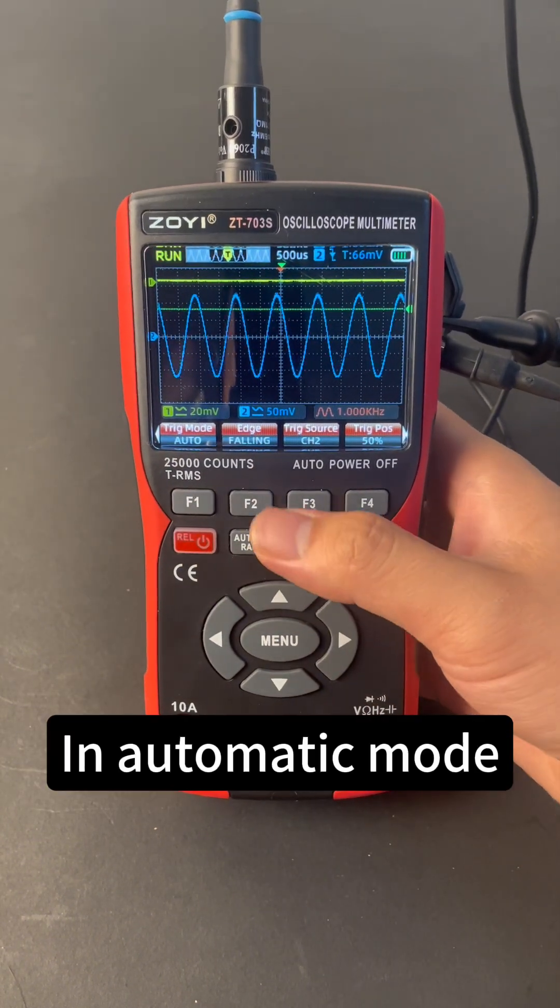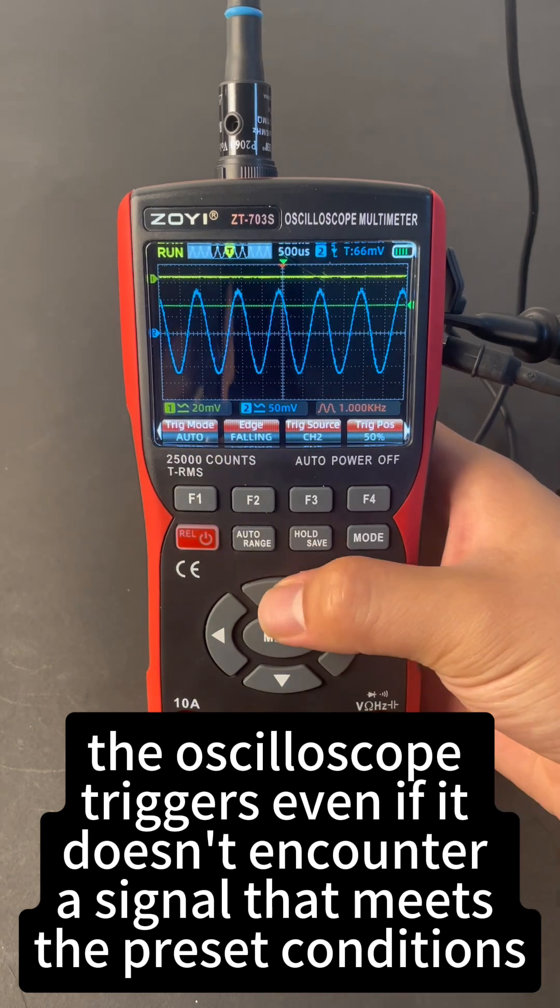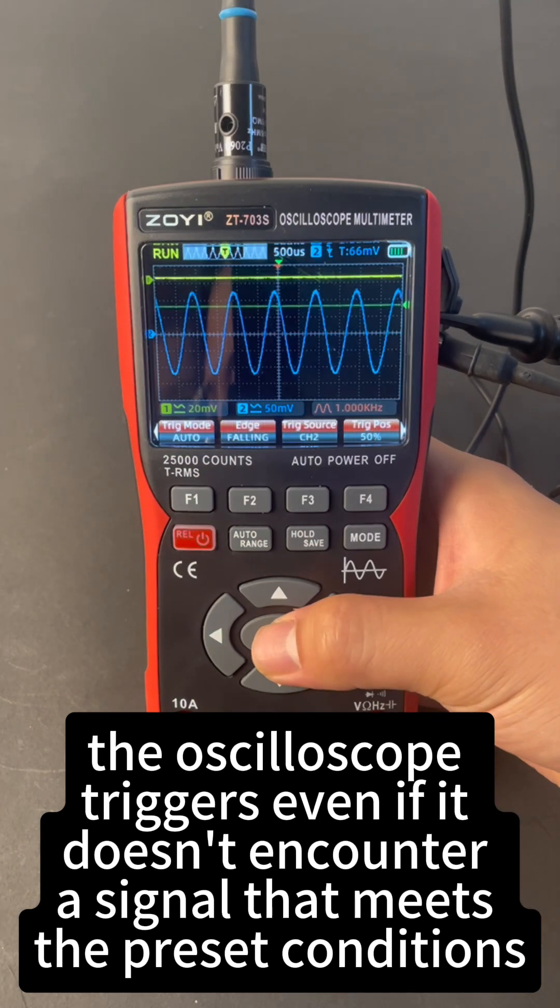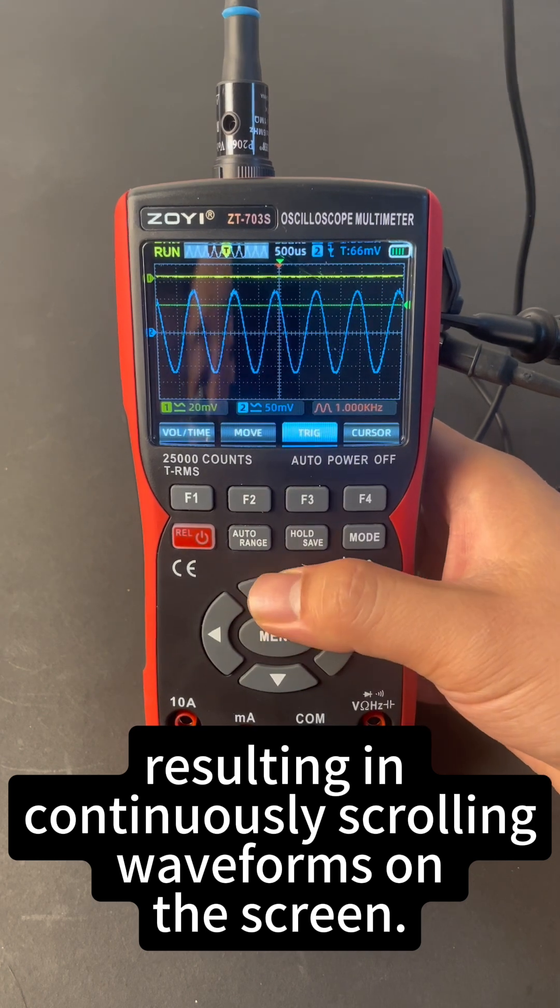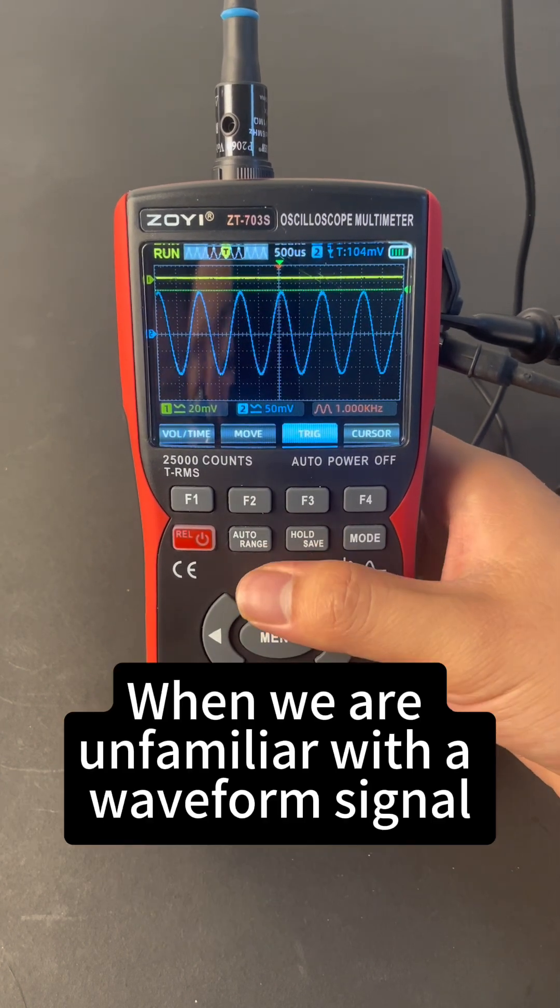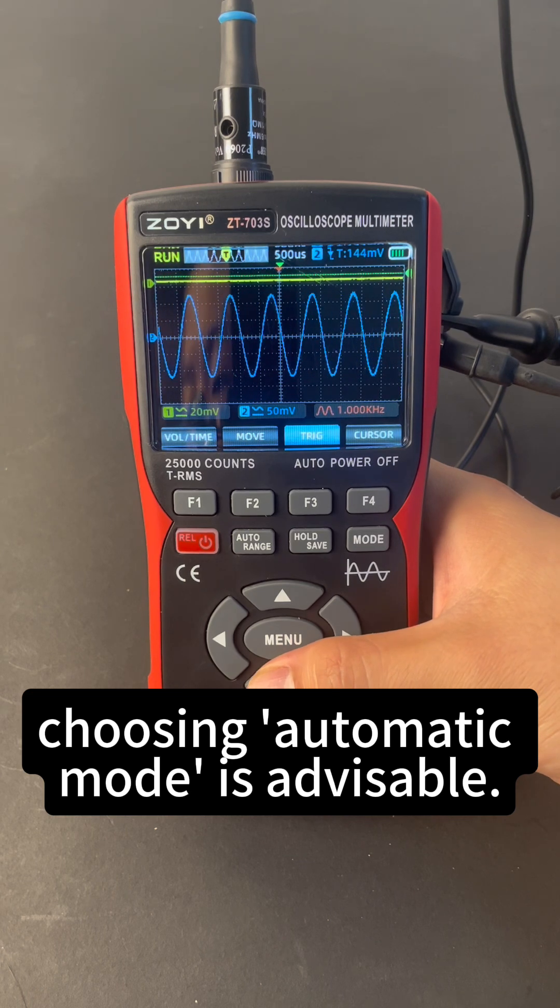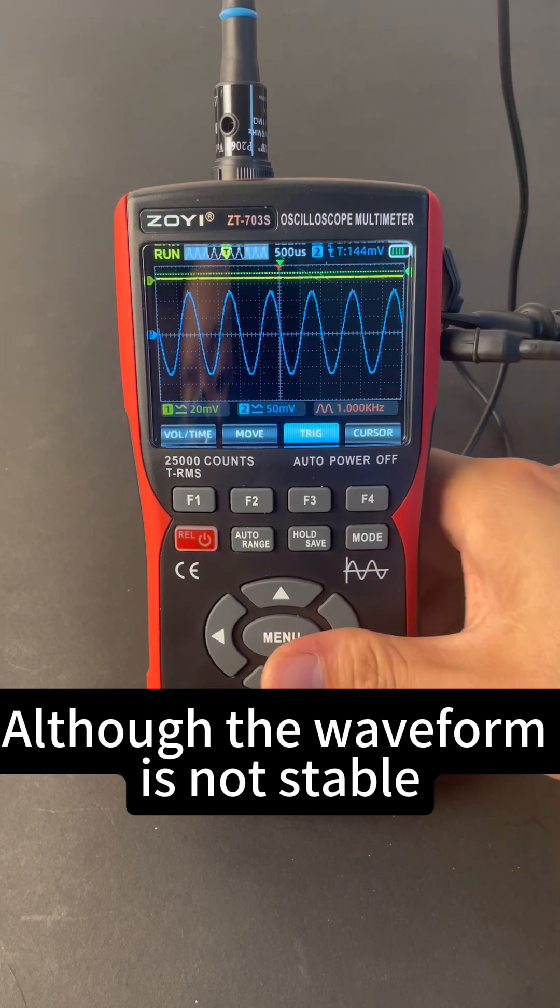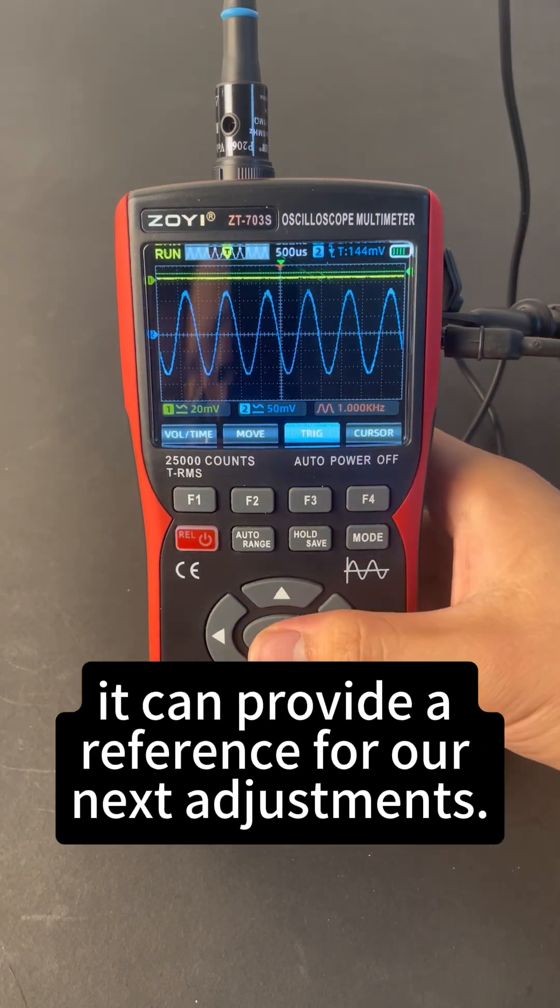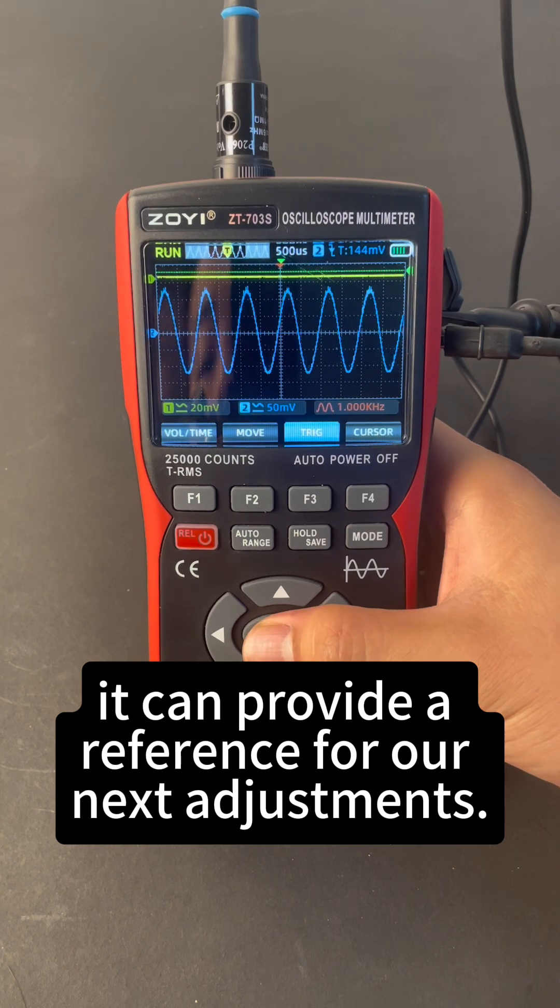In automatic mode, the oscilloscope triggers even if it doesn't encounter a signal that meets the preset conditions, resulting in continuously scrolling waveforms on the screen. When we are unfamiliar with the waveform signal, choosing automatic mode is advisable. Although the waveform is not stable, it can provide a reference for our next adjustments.